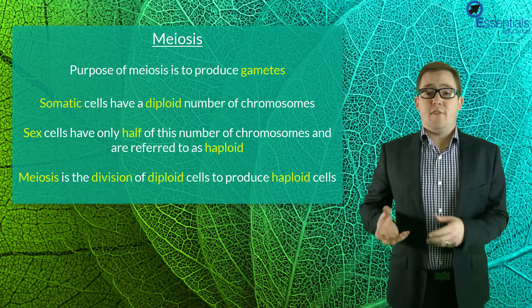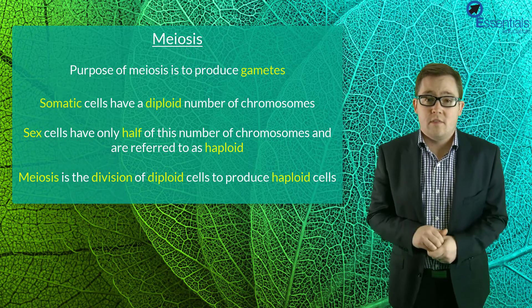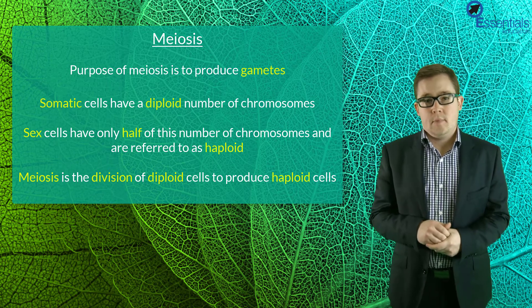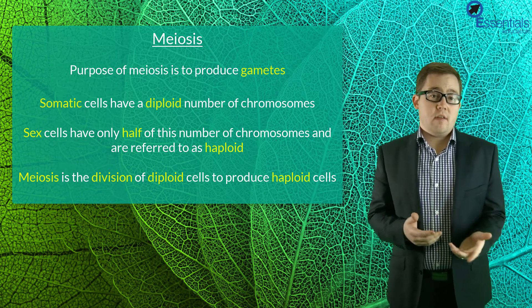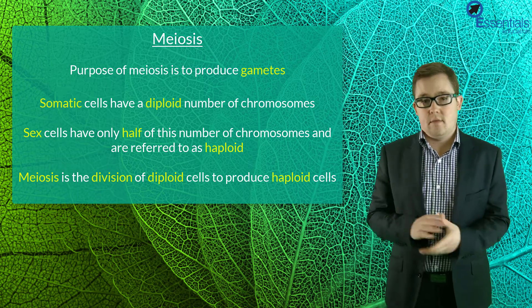Now meiosis differs from other types of cell division as the purpose of meiosis is to produce what's called gametes or sex cells, and in humans these are called sperm and egg. Now before we delve into our process, it's very important that you understand a little more about the differences between normal body cells and sex cells.